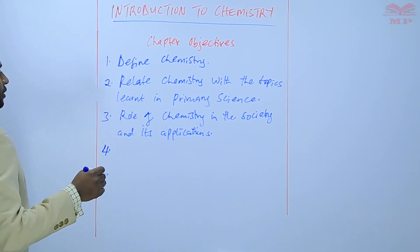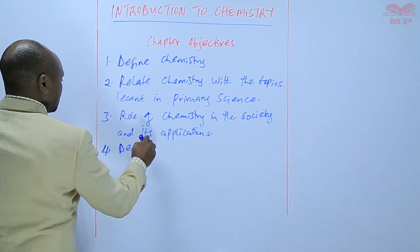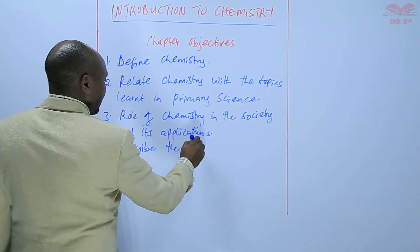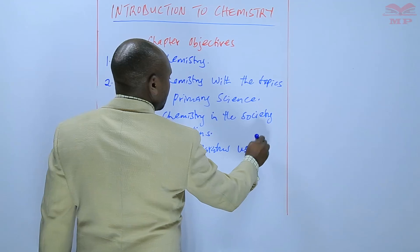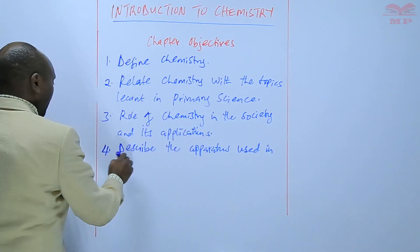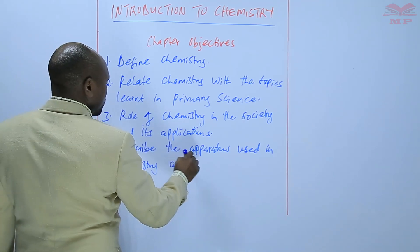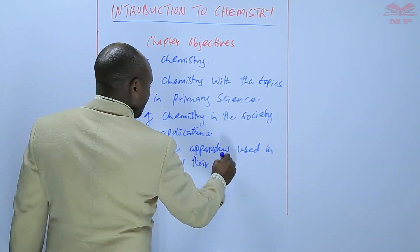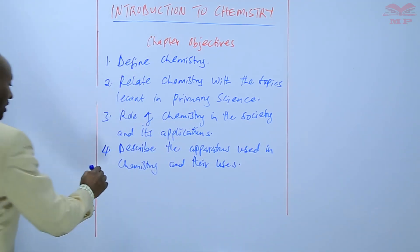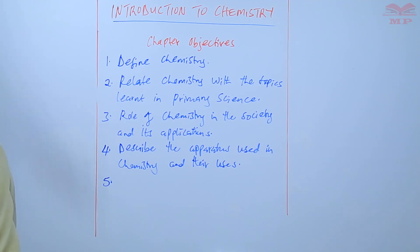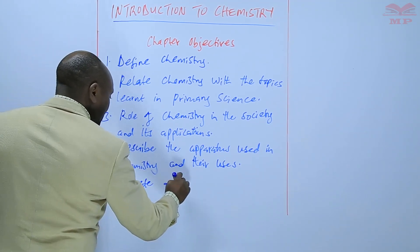Number four, we will also describe the apparatus used in chemistry and their uses. The fifth objective: a learner should be able to operate a balance and burner.